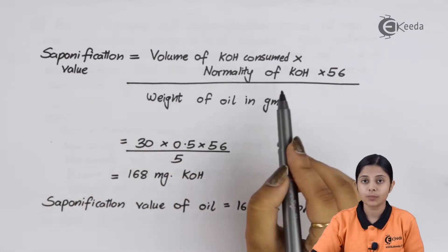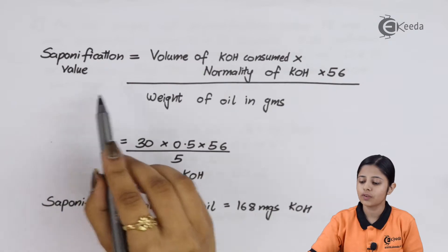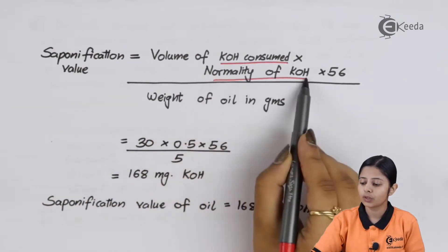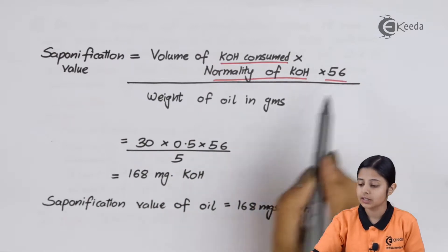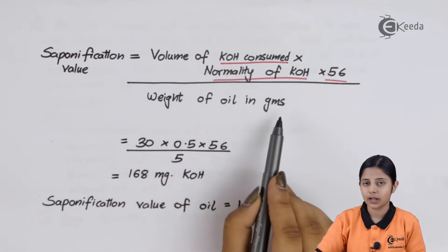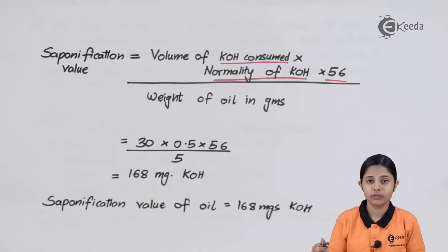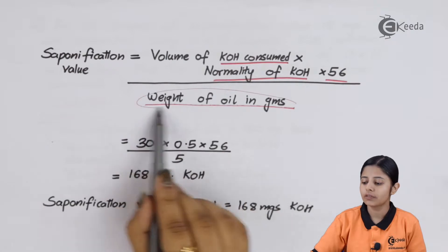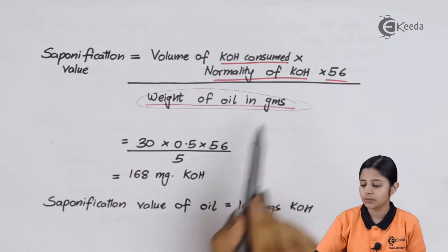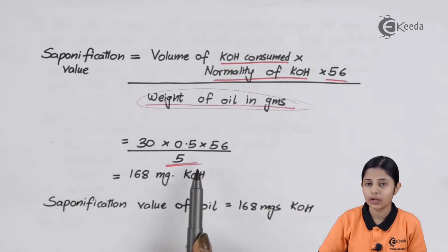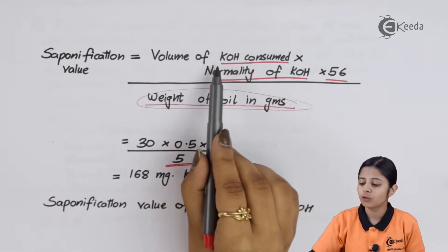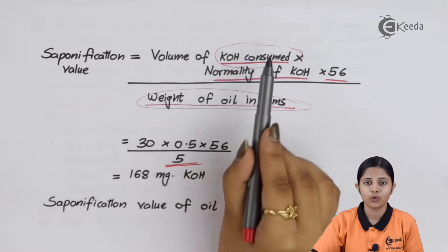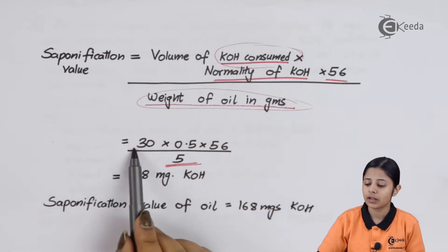The formula for saponification value is: Saponification Value = (Volume of KOH consumed × Normality of KOH × 56) / Weight of oil in grams. The weight of oil is 5 grams, so we substitute 5. The volume of KOH consumed was calculated as 45 minus 15, which equals 30 ml, so we write 30.